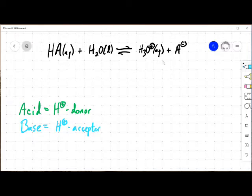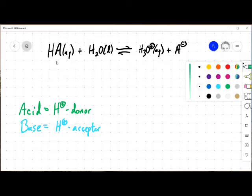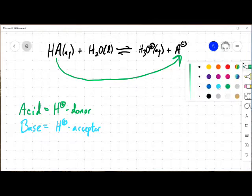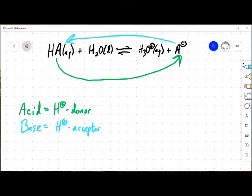So in my equilibrium up here, what is happening with HA as it goes through this reaction? It is losing H plus, right? So we've got HA losing H plus to become a base, which if we go the other direction, A minus is behaving like a base. So HA and A minus are a conjugate acid-base pair.